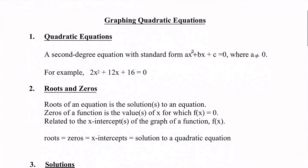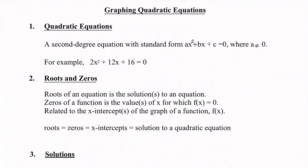Next, our roots and zeros. These are going to have a few different names. The roots of an equation are the solutions to that equation — a root is the same thing as a solution. The zeros of a function are the values of x for which f(x) equals zero. And these are also related to the x-intercepts of the graph of the function. So roots, zeros, x-intercepts, and solutions to a quadratic equation all mean the same thing.